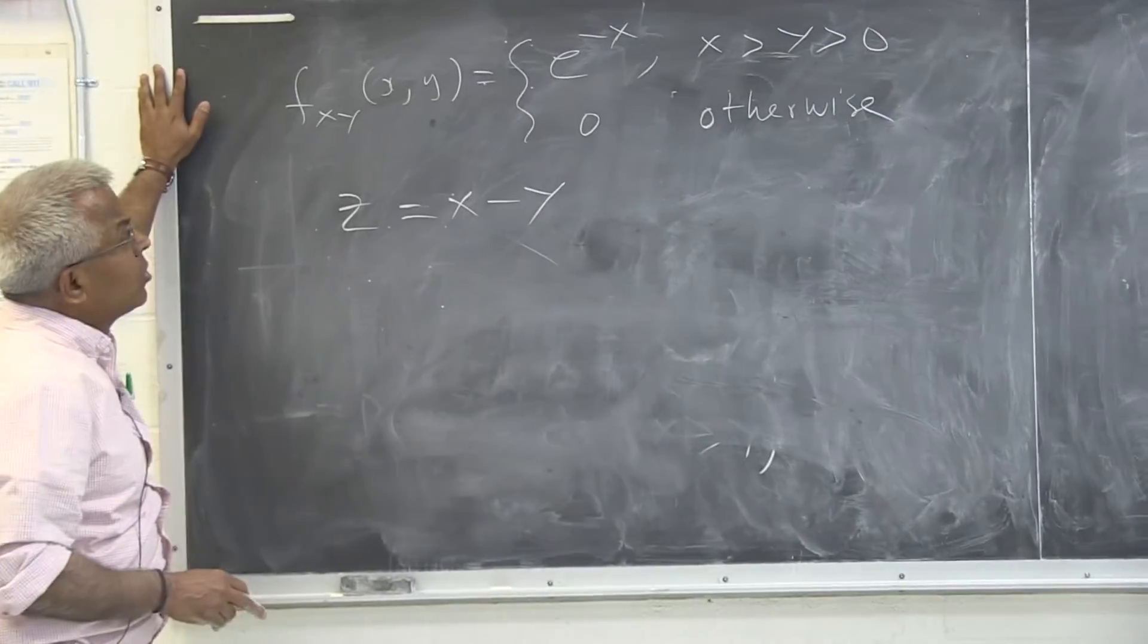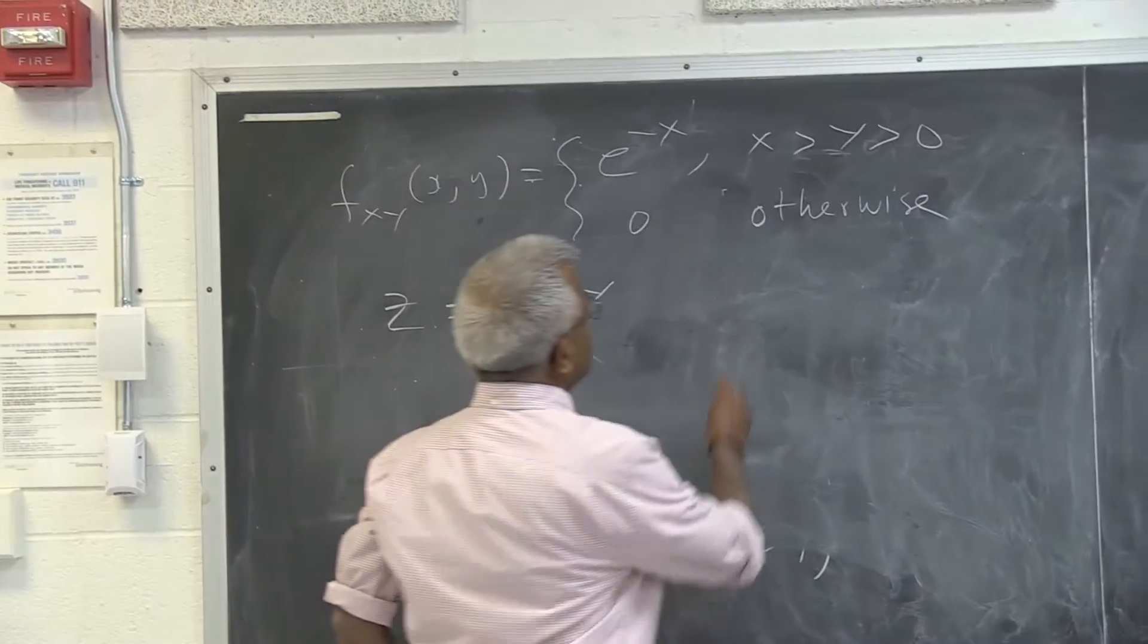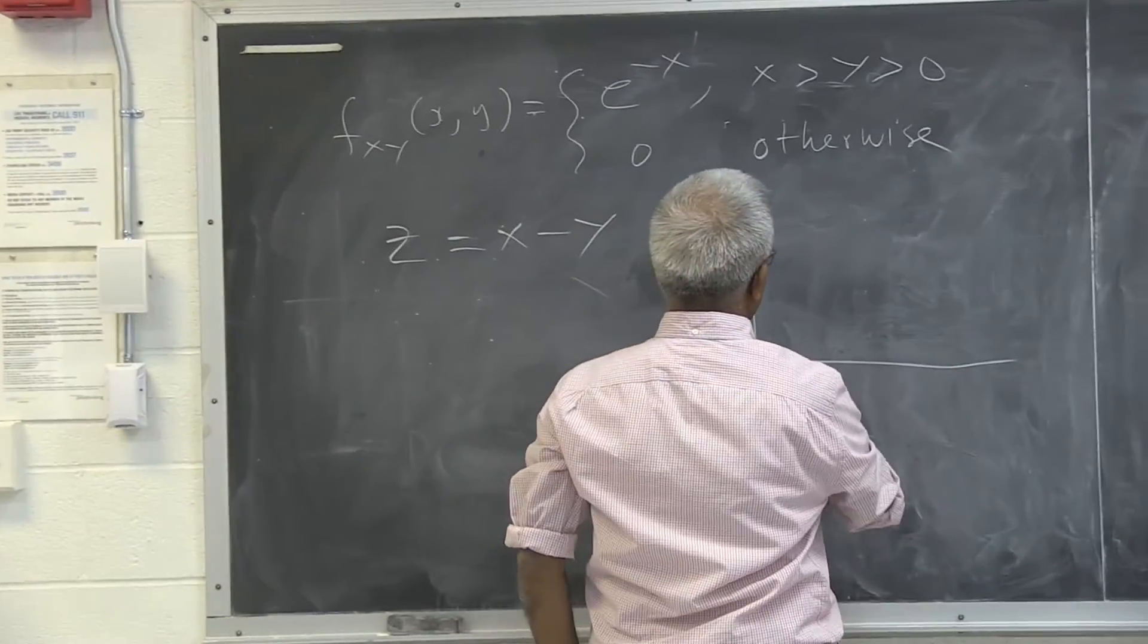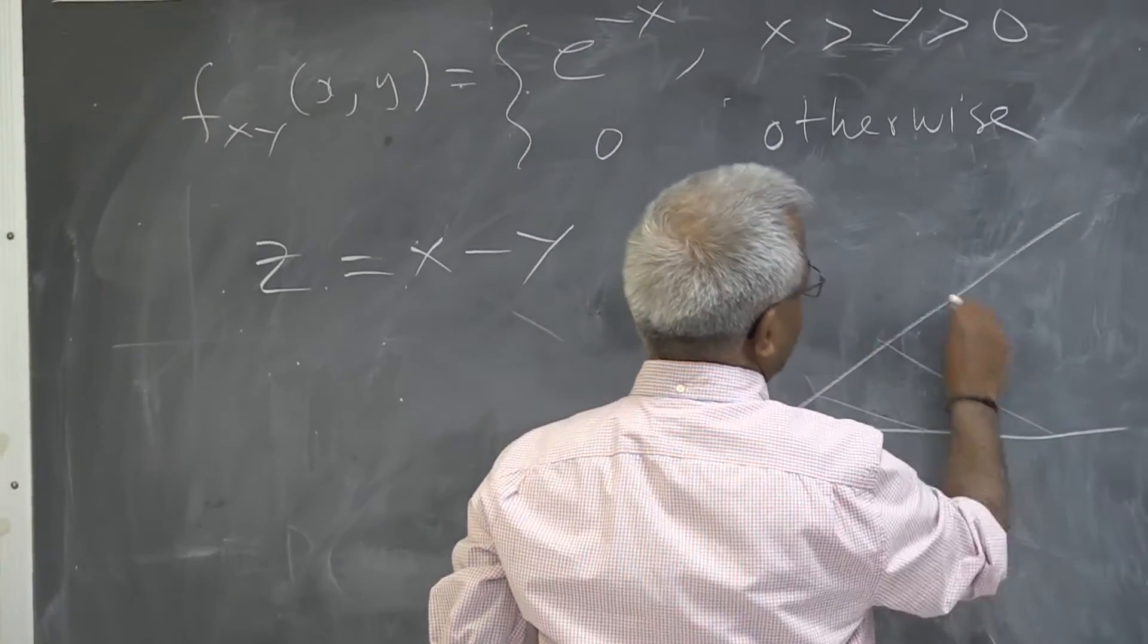Let's look at this problem. The joint density function is given in this region, it's only valid for x greater than y.